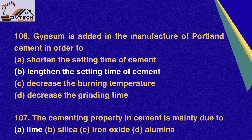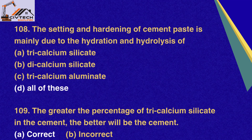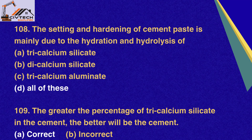Question 107. The cementing property in cement is mainly due to: A. Lime, B. Silica, C. Iron oxide, D. Alumina. Correct option A: Lime. Question 108. The setting and hardening of cement paste is mainly due to the hydration and hydrolysis of: A. Tri-calcium silicate, B. Dicalcium silicate, C. Tri-calcium aluminate, D. All of these. Correct option D: All of these. Question 109. The greater the percentage of tri-calcium silicate in the cement, the better will be the cement. Correct option A: Correct.